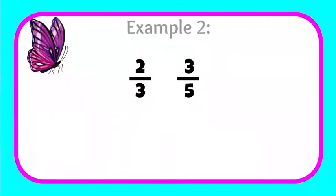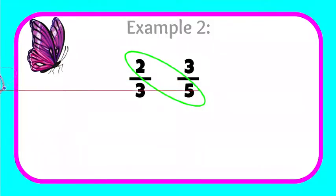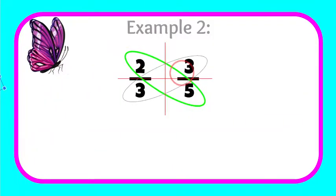Let's look at example two. In example two, I have two thirds and three fifths. First thing we're going to do is draw our wing parts. Two is going to multiply by five, and three is going to multiply by three.